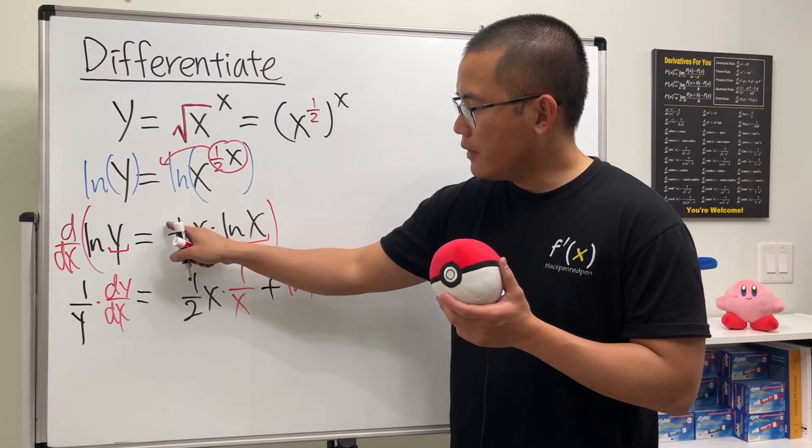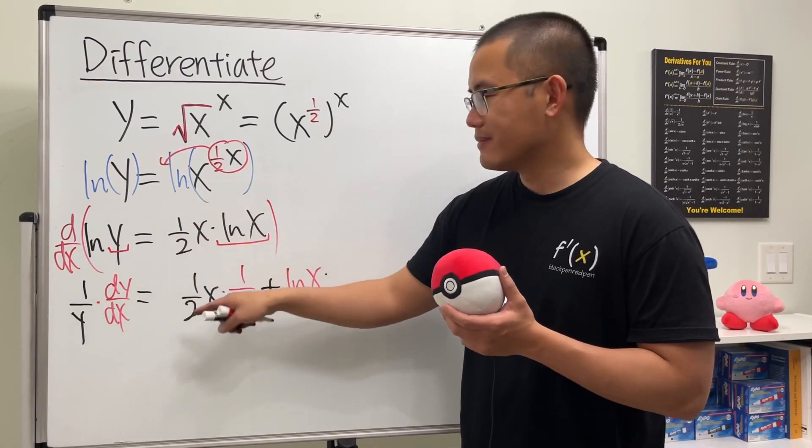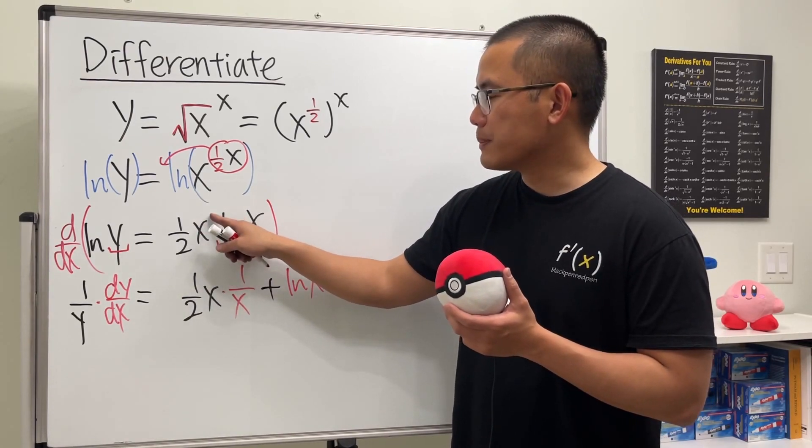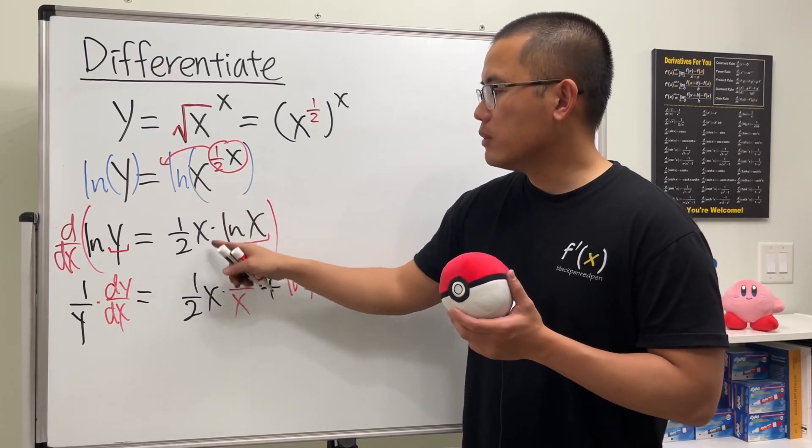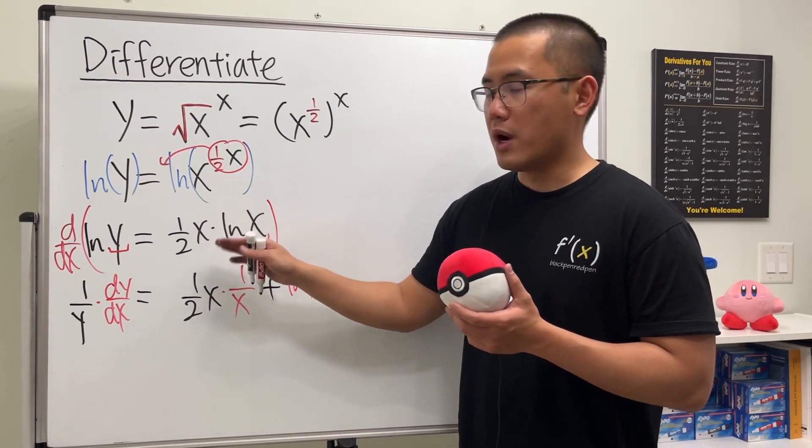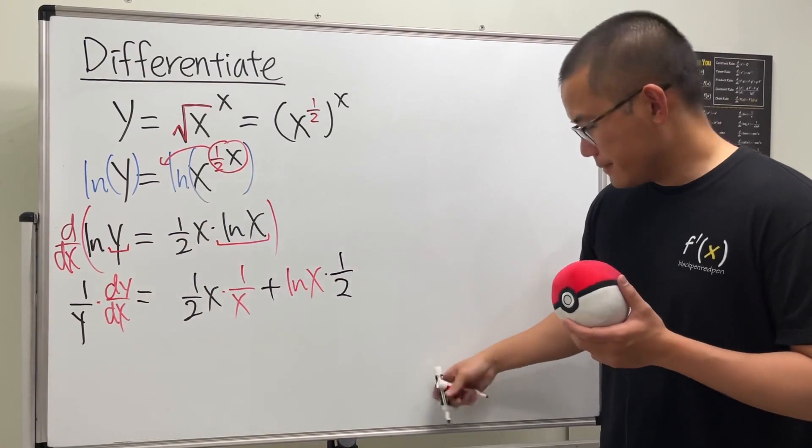Then we add the second function, which is ln x, and multiply by the derivative of the first. Derivative of one over 2x is just one over two, because this is x to the first power. If you bring the one to the front you get one half.